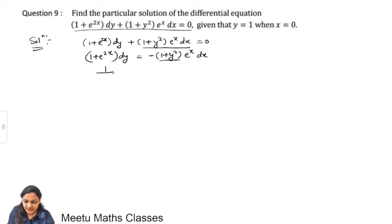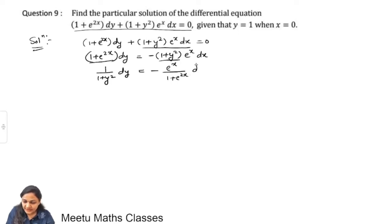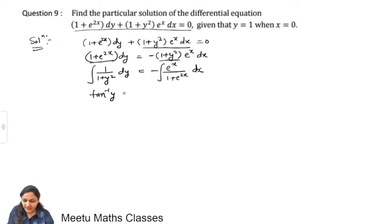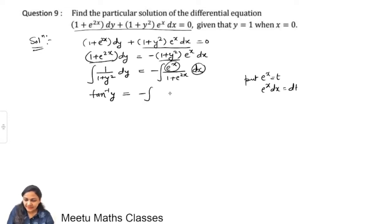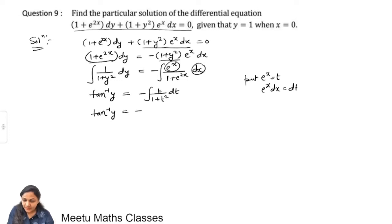Separating variables: 1/(1 + y²) dy = −e^x/(1 + e^(2x)) dx. Now integrating both sides: the integral of 1/(1 + y²) is tan⁻¹ y. On the right side, substitute e^x = t, so e^x dx = dt. The integral of 1/(1 + t²) dt is tan⁻¹ t + c.